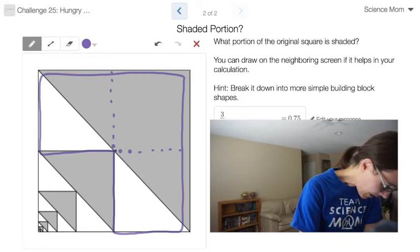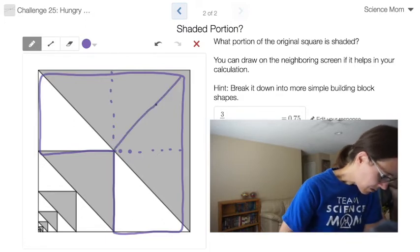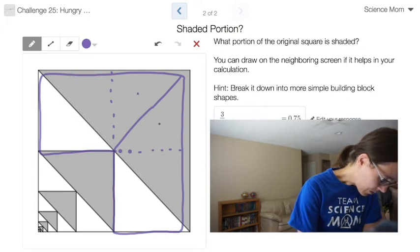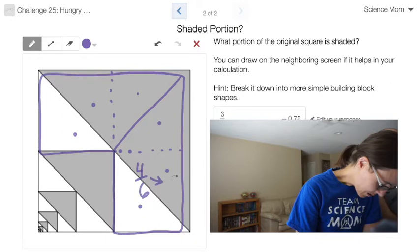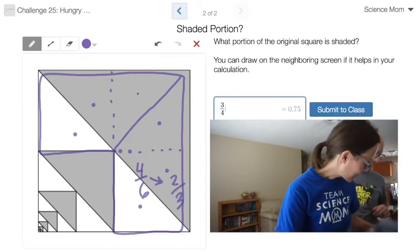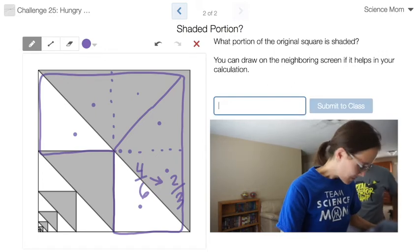And then if I divided that into a triangle as well, I would have one, two, three, four, five, six equal pieces. And one, two, three, four of those equal pieces is shaded. And four out of six, of course, reduce to two-thirds. So my answer is two-thirds.